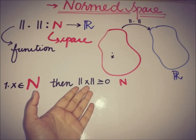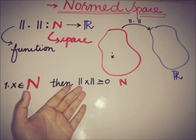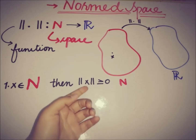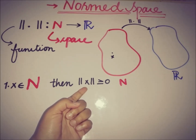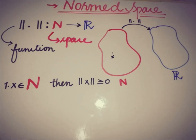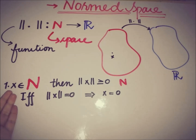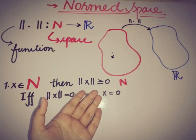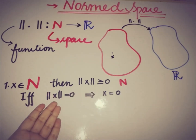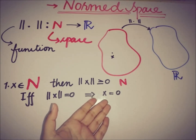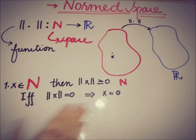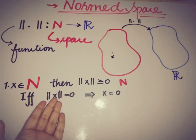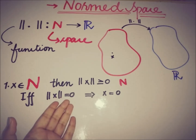As the definition of length states, the length of a vector must be positive or zero. For all elements taken from the space, the norm must be greater than or equal to 0. And if the norm of any element x from space N is 0, then the element itself is also 0. This is also true in the converse: if any element is 0, then its norm or length is also 0.